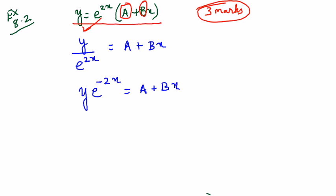This is the uv method, so it is u dv plus v du. Let us first differentiate y with respect to x. It will be dy by dx into e power minus 2x. Plus v du.